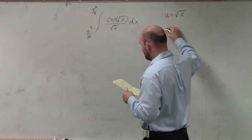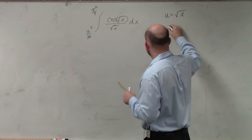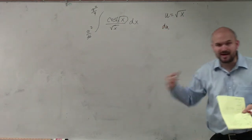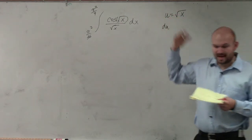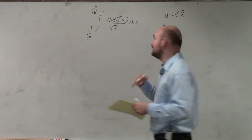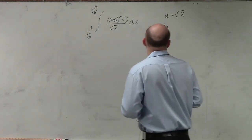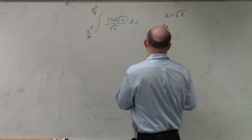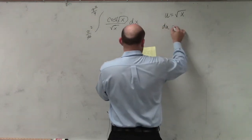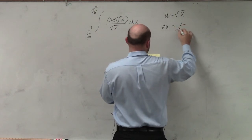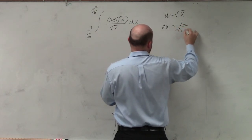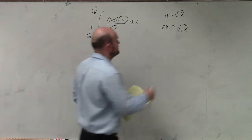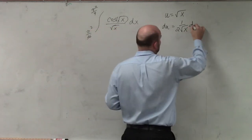So now if I just want to find my du, I could rewrite that as x to the 1 half, and then differentiate x to the 1 half, and get my du, which is equal to 1 over 2 times the square root of x, times dx.